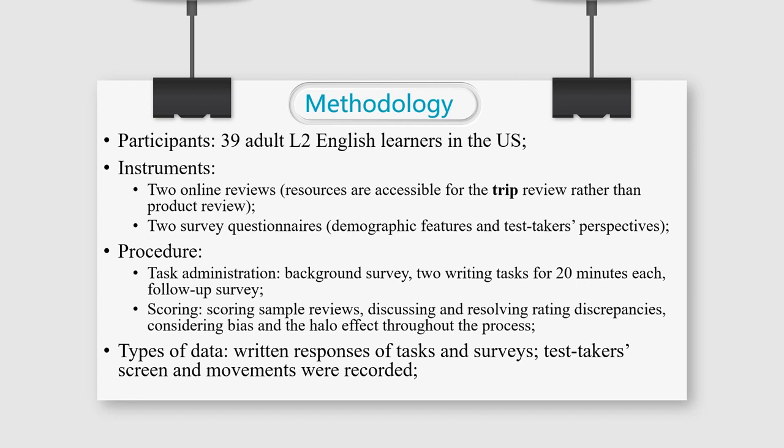In terms of scoring, sample reviews were scored and rating discrepancies were discussed and resolved. To avoid bias effect, test-takers background was not exposed to readers. In case of the halo effect, writing responses were distributed by tasks and two responses from the same test-takers would not access one after another. Additionally, responses from participants and their movement were the main data sources for analysis.